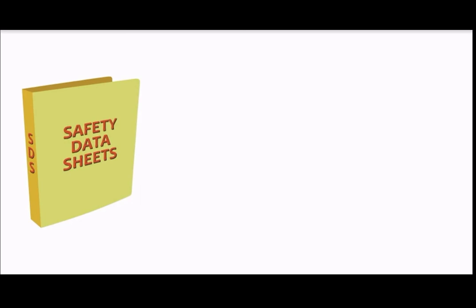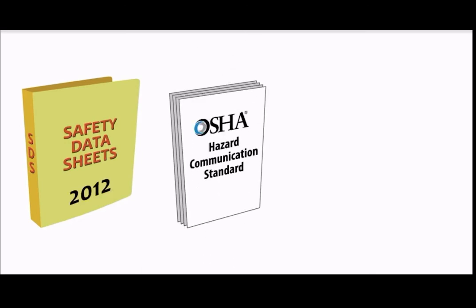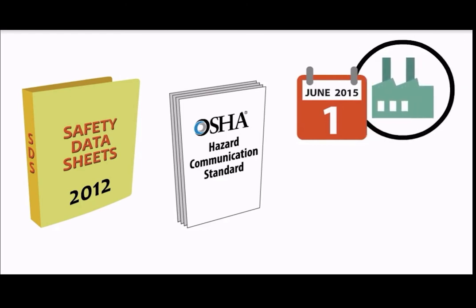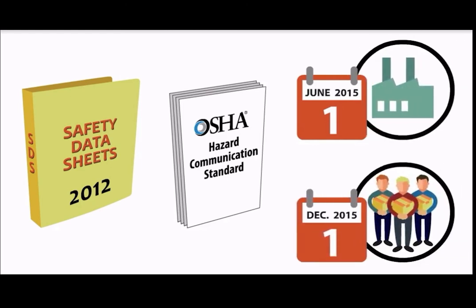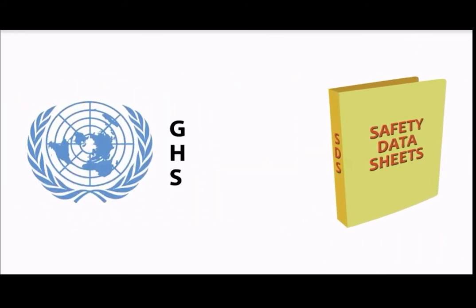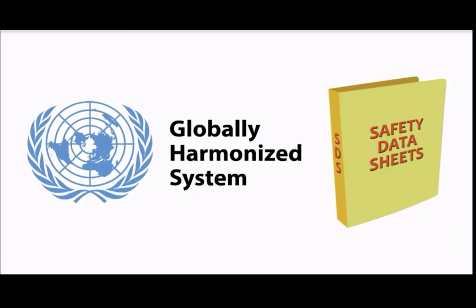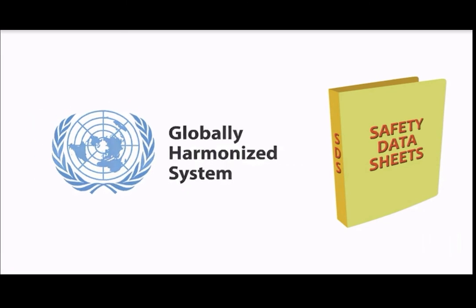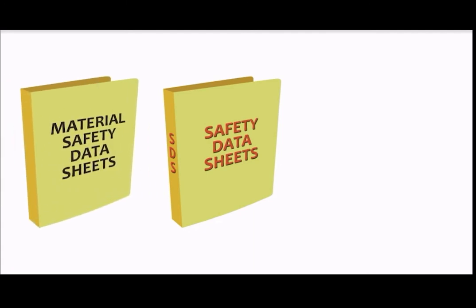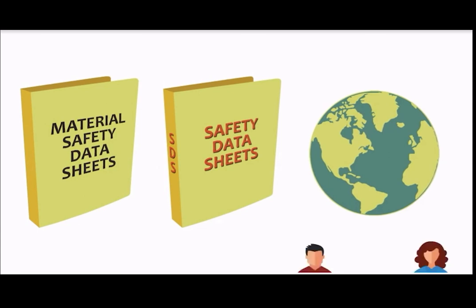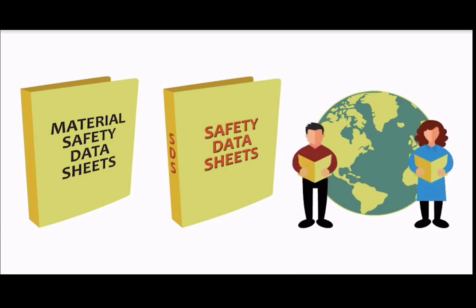First, the SDS. The current format of the SDS was adopted in 2012 in line with OSHA's new Hazard Communication Standard. It became mandatory June 1st, 2015 for manufacturers and December 1st, 2015 for everyone else. It's based on the United Nations GHS, or Globally Harmonized System of Classification and Labeling of Chemicals. It replaces what we used to know as Material Safety Data Sheets.